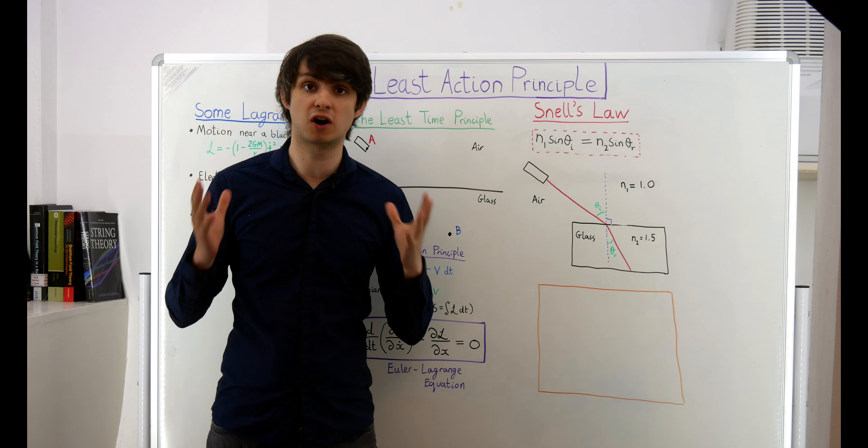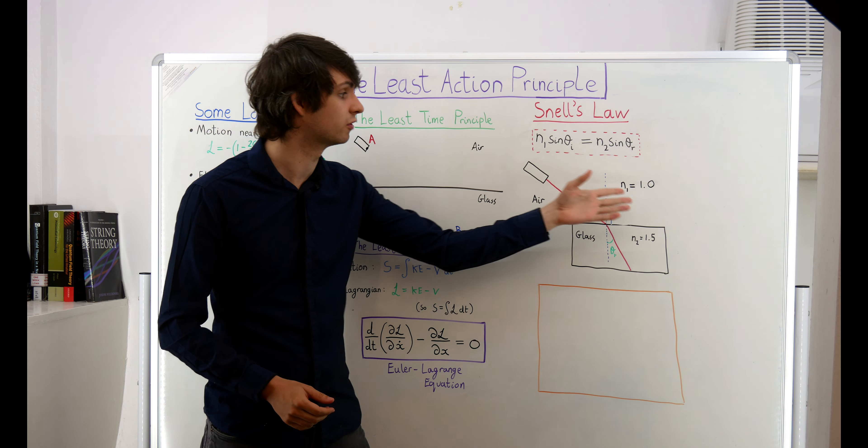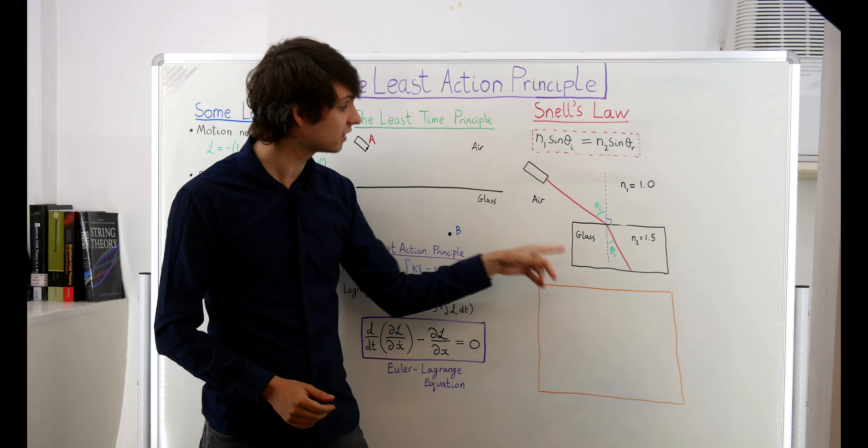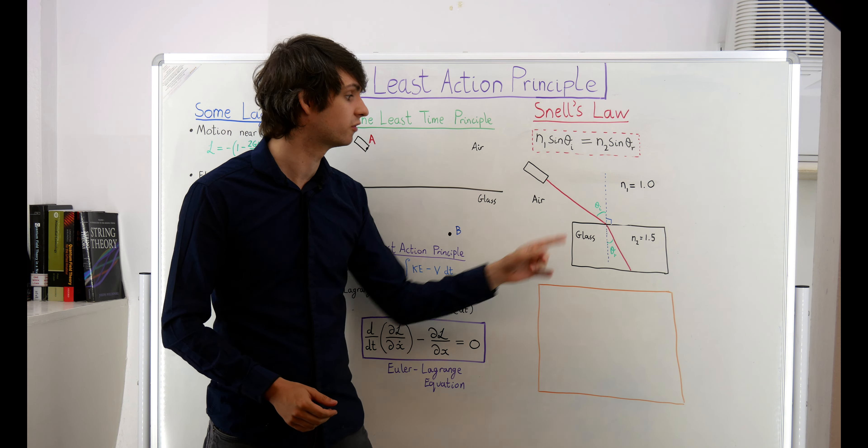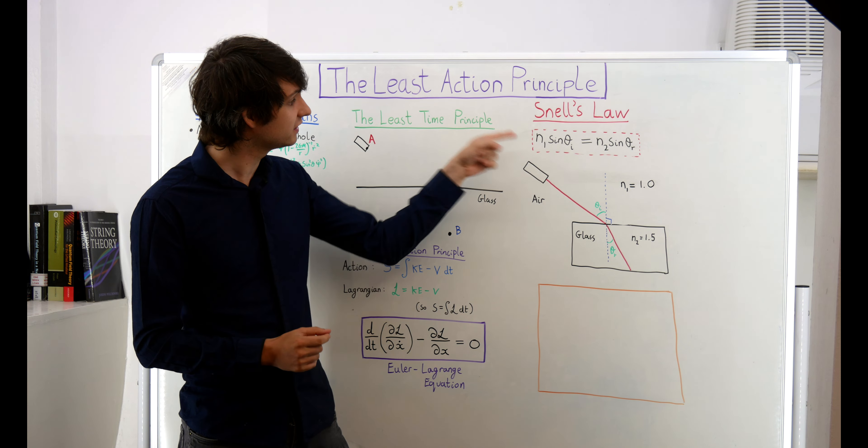Light travels faster in air than it does in glass, and so air has a refractive index of about 1, whereas glass has a refractive index of about 1.5. Now, what Snell's law tells us is this.